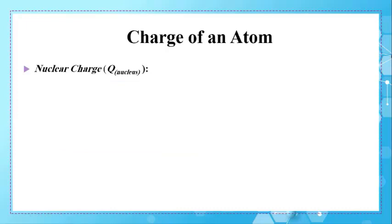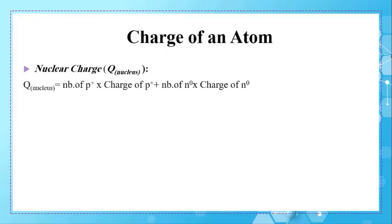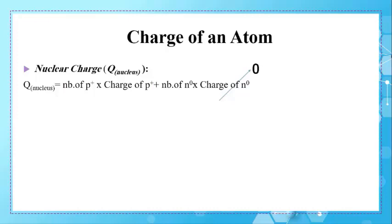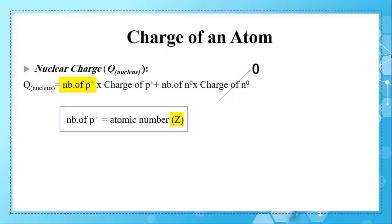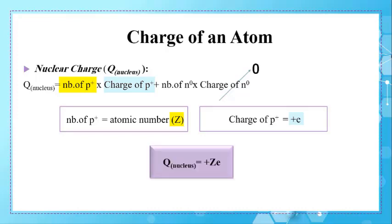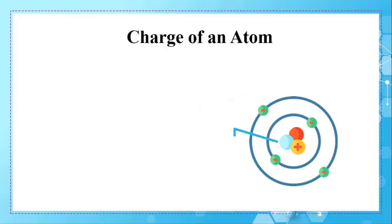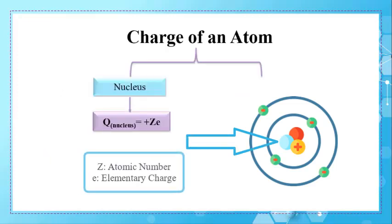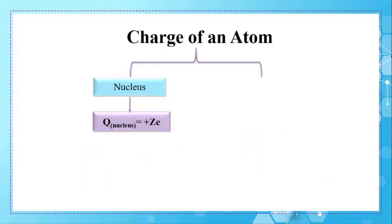Let's prove that by calculation. The nuclear charge, abbreviated Q_nucleus, equals the number of protons multiplied by the charge of a proton plus the number of neutrons multiplied by the charge of a neutron. Since neutrons do not affect the charge, the nuclear charge equals the number of protons multiplied by the charge of a proton. Substituting Z for the number of protons and +E for the proton charge, the formula becomes Q = +ZE, where Z is the atomic number and E = 1.6 × 10⁻¹⁹ C.